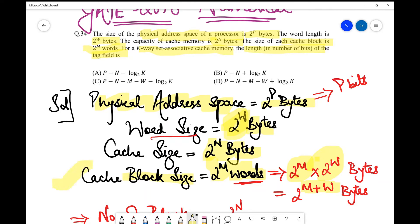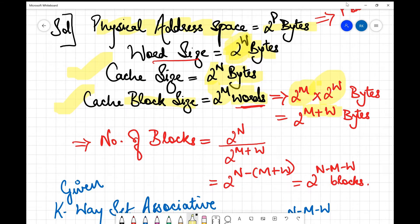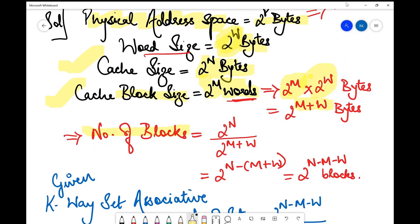After this, we have the cache block size and cache size. What's the next step in set associative memory numericals? You find out the number of blocks present in the cache. Number of blocks in cache will be total cache size 2^n upon cache block size 2^(m+w). Using the exponentials law, when two exponents are divided their powers get subtracted, so this is 2^(n-m-w).